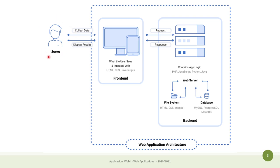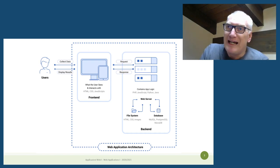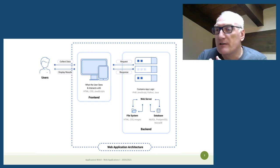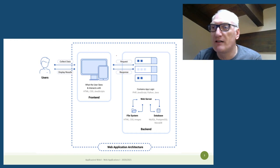We have users — the main actor in our system. We are providing a service to users, and they interact with a web application through a front-end application, which includes the browser plus the code that runs inside it. This application needs to communicate, exchange data, and request data from a back-end server. The whole web application today is split into a front-end — the part that runs on the user's computer inside the browser — and a back-end component, which is everything that runs on the server. Between them is the internet.